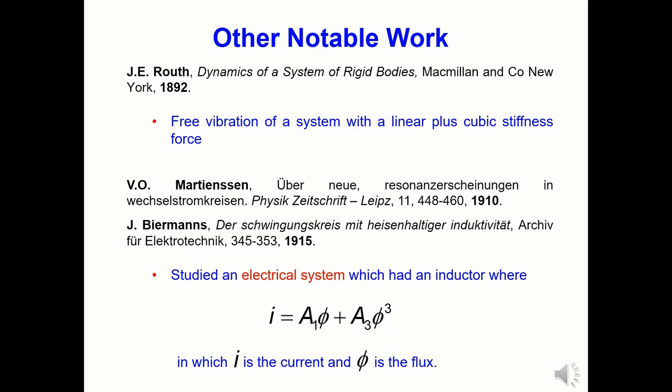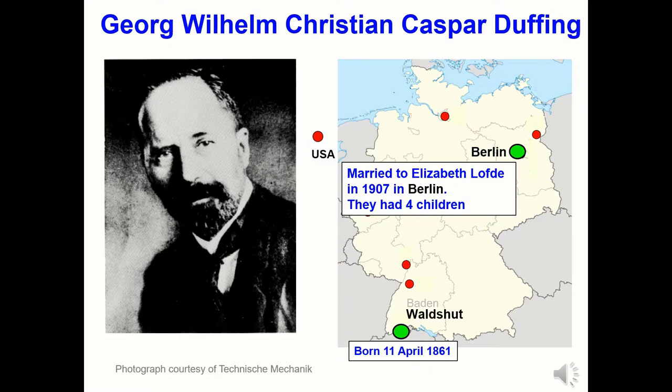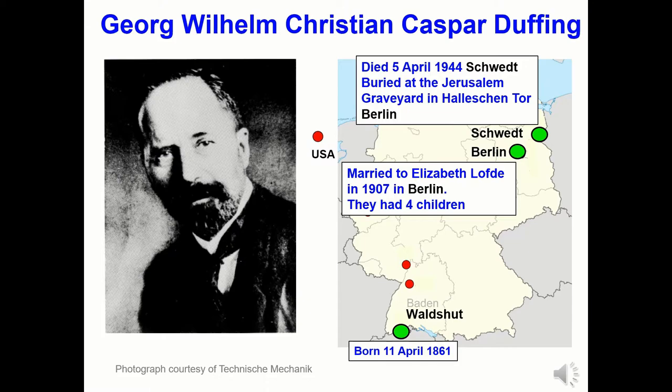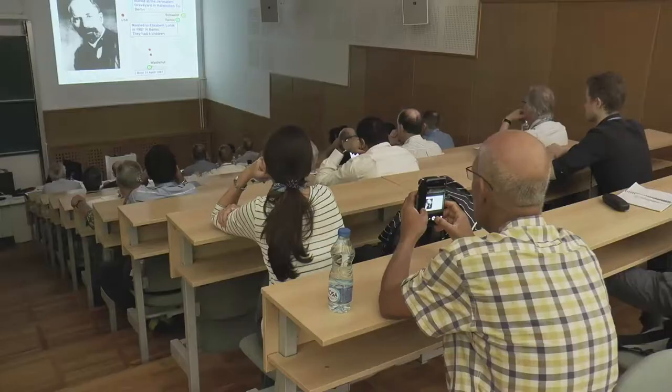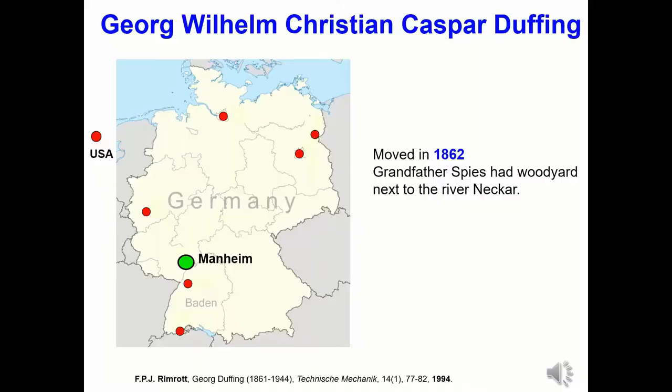As you are aware, George Duffing was German. He was born in Waldshut in Baden in 1861. He married Elizabeth Loft in Berlin in 1907 and the couple had four children. Duffing died in Schwet in northern Germany in 1944 and is buried in Berlin. George Duffing was the oldest of six children. When he was one, his family moved to Mannheim, where his grandfather had a large wood yard on the river Necker.